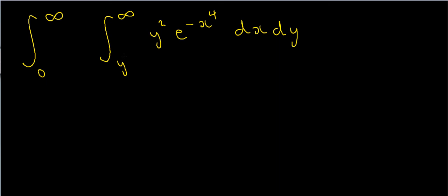Here's another example of a double integral. This time the limits actually go out to infinity for both x and y, but it works pretty much in the same kind of way. First, I've got to integrate this function — y squared e to the minus x to the 4 — first with respect to x and then with respect to y.